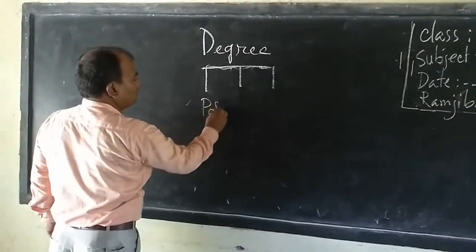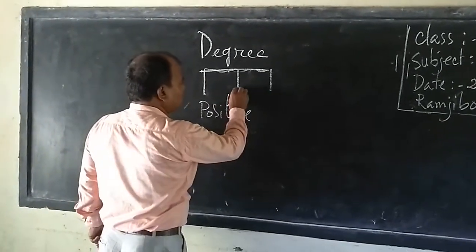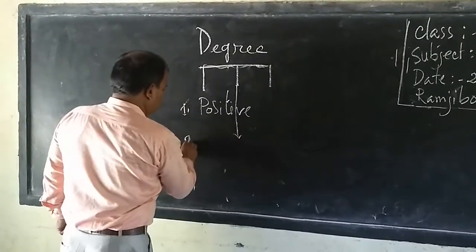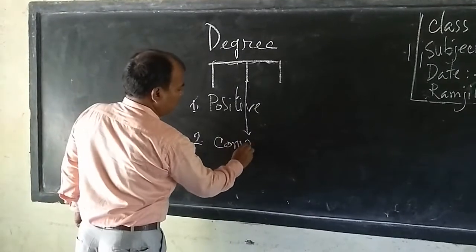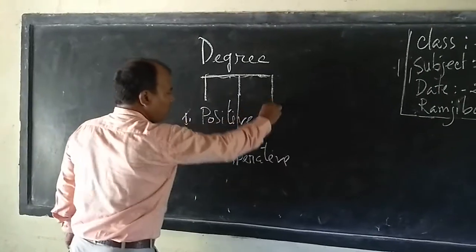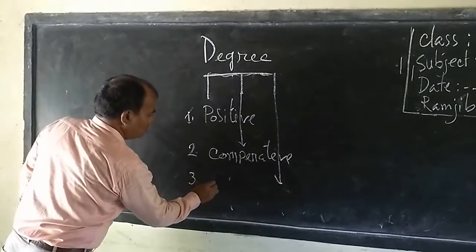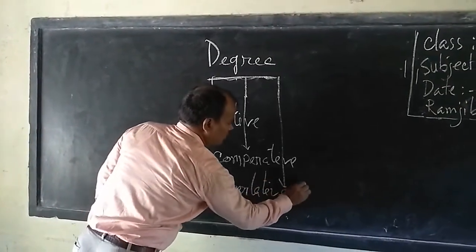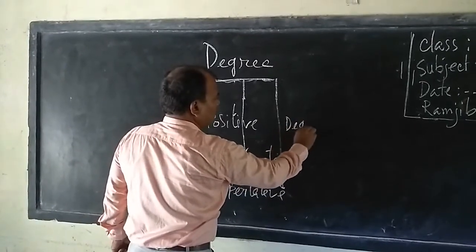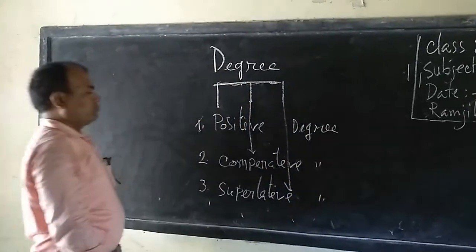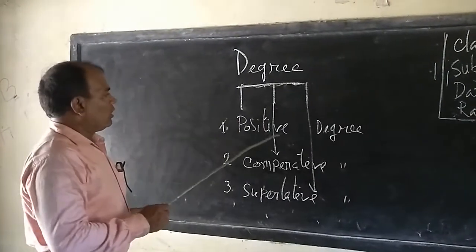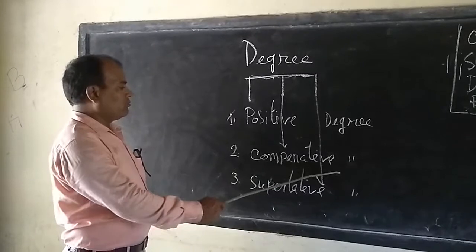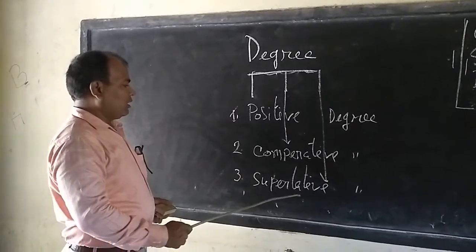Degree is three kinds: number one, positive degree; number two, comparative degree; number three, superlative degree.